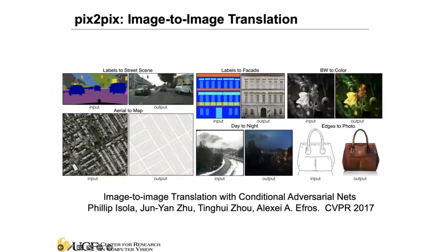So we are not just feeding the network some random noise and asking the network to generate some images. In this case, we are giving the network a label map as the condition to tell the generator to generate images that have the corresponding segmentation map. For this input, it's the satellite image to the map. So we're giving the generator a condition: based on this aerial image, generate the corresponding map. Another example is giving the sketch, generate the corresponding object or image that fits this kind of sketch input.